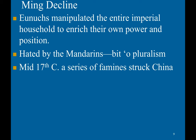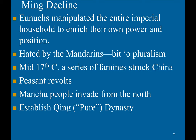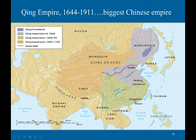In the mid-17th century, a series of famines struck China, leading to peasant revolts, and the Manchu people invaded from the north. They established a Qing, or 'pure,' dynasty. This is a map of the Qing possessions — as we can see, they started in Manchuria but gradually expanded into Beijing and eventually conquered all of China and Mongolia.